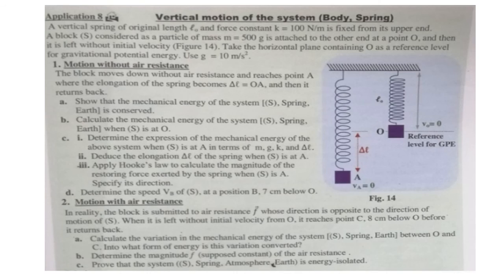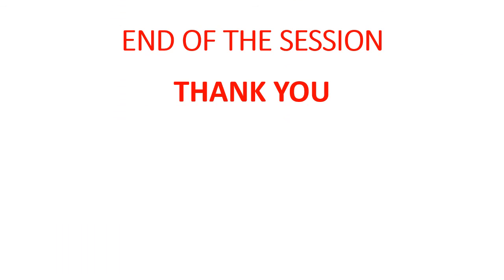Kindly solve this exercise about the vertical motion of the system body-spring in two cases. First case: motion without air resistance, meaning motion without non-conservative forces. Second case: motion with air resistance, meaning motion with non-conservative forces. This is the end of the session. Thank you.